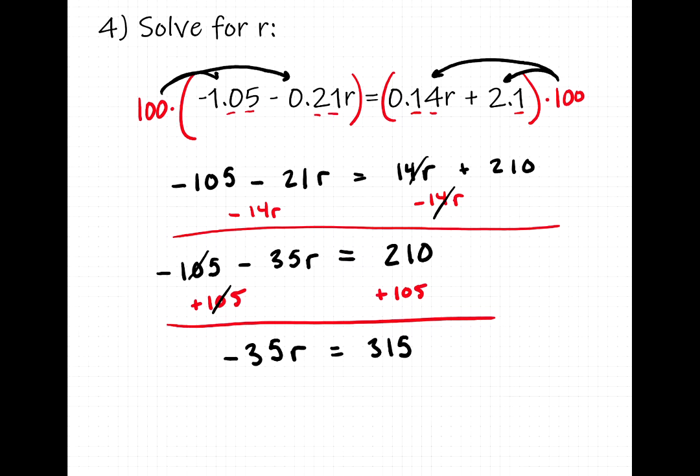One step away, we want to get r by itself. So right now we have negative 35 times r. The opposite of multiplying by negative 35 is dividing by negative 35. So we'll divide the left and the right by negative 35.